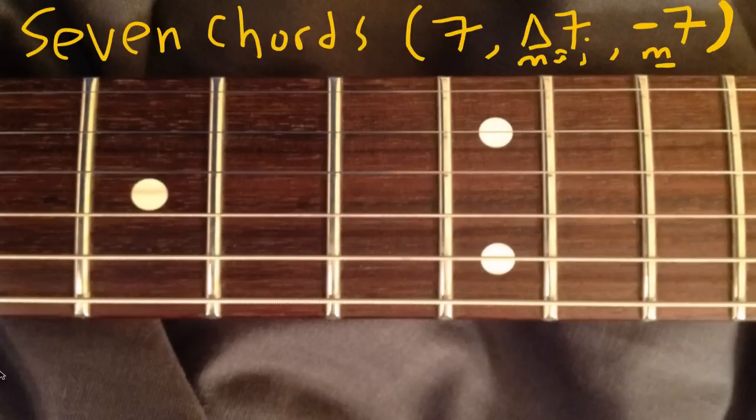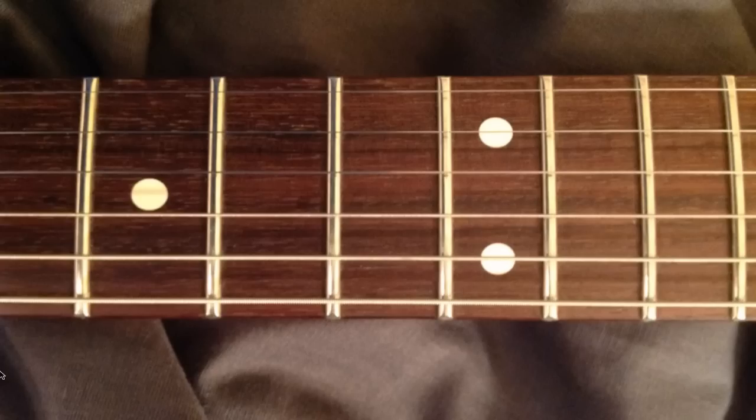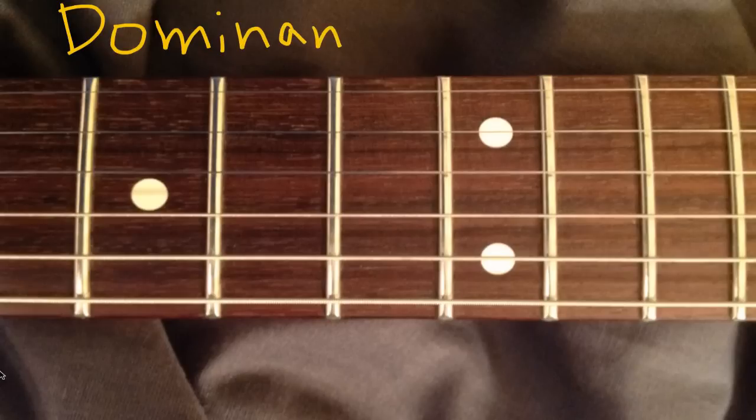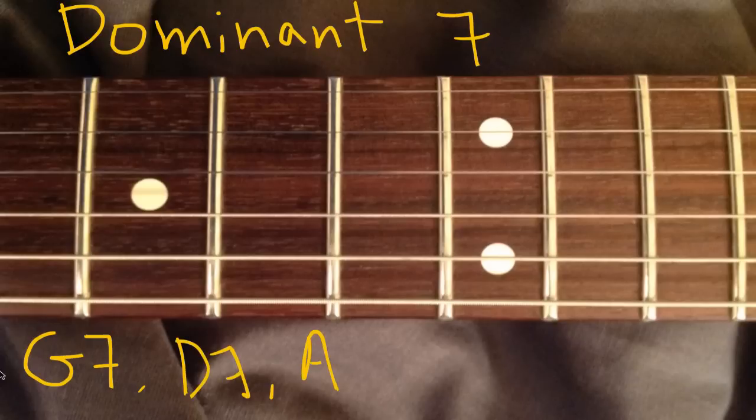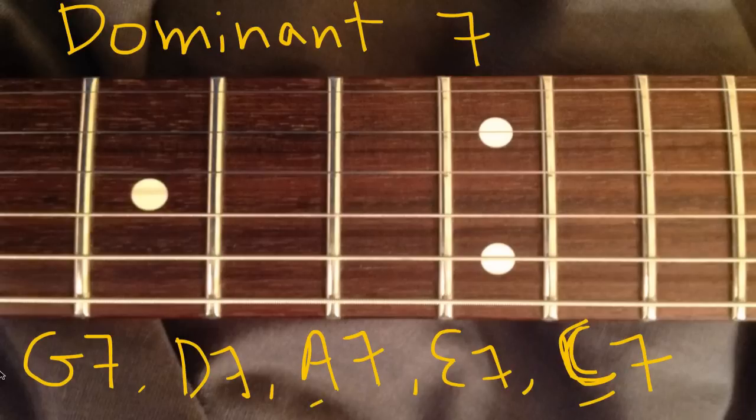So let's talk about the dominant seven chord first. When you see just the number seven after a chord name, probably the most common ones to run across are G7, D7, A7, E7, and sometimes C7. These are real common ones. These all, whenever you see that number seven, are talking about dominant seven chords.